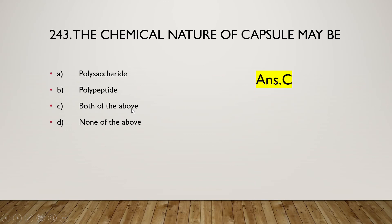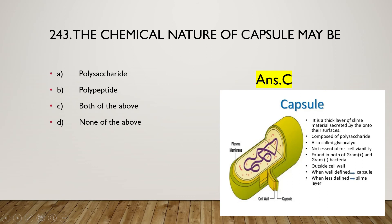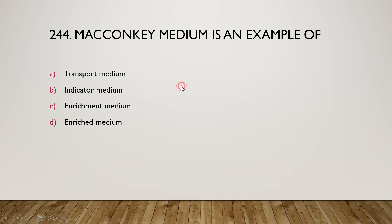Next question: the chemical nature of a bacterial capsule may be polysaccharide, polypeptide, both, or none? The right answer is option C — both polysaccharide and polypeptide are constituents of the bacterial capsule. The capsule is a thick slime layer outside the bacterial surface composed of polysaccharide and polypeptide, also called glycocalyx. It is not essential for cell viability, found in both gram-positive and gram-negative bacteria. When well-defined it is called a capsule; when less defined, a slime layer.